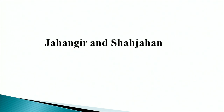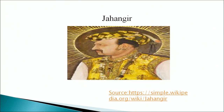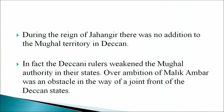Jahangir decided to follow Akbar's expansionist policy in the Deccan, but could achieve little success due to certain problems. He could not devote much attention in the crucial phase due to Prince Khurram's revolt. The Mughal nobles were also involved in a number of intrigues and conflicts to gain advantages from the Deccan. During the reign of Jahangir there was no addition to the Mughal territory in the Deccan. The over-ambition of Malik Ambar was an obstacle in the way of a joint front of the Deccan states.